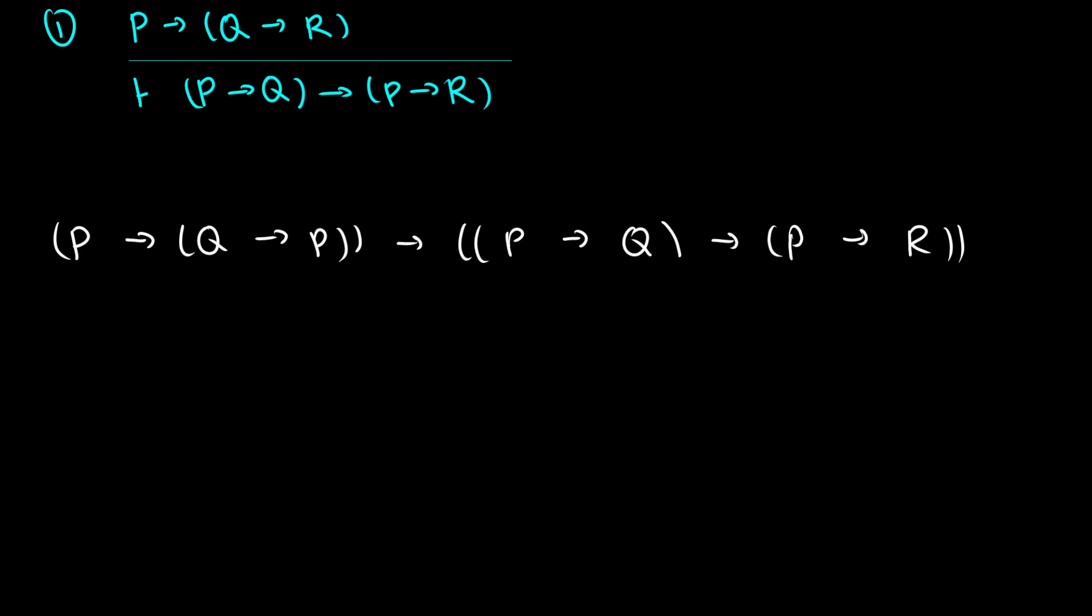Remember, when an argument is valid, what this means is that the premises—in this case we have a premise, we have a conclusion—if we have the premises as a valid argument, so P1 arrow C, this should be a tautology. In other words, if the premises happen, whether they're true or false, we should get the conclusion, which means we should never have a case where we have 1 arrow 0. This should never happen.